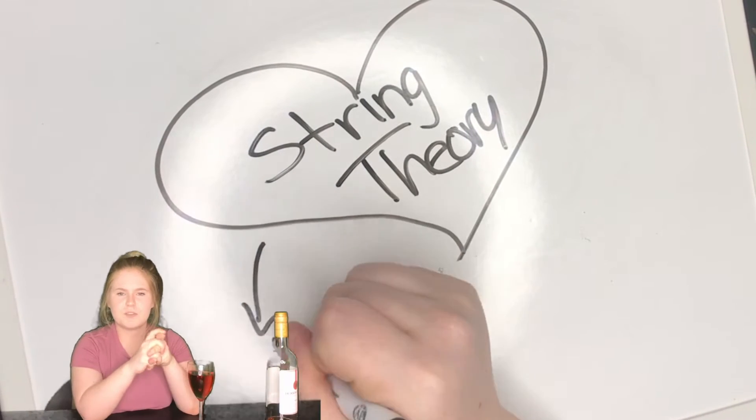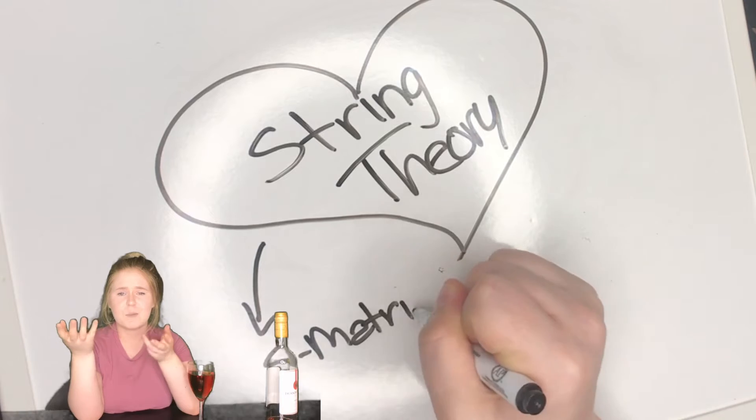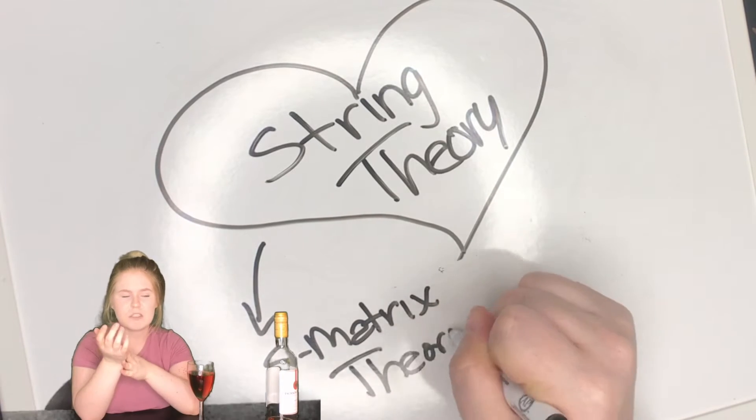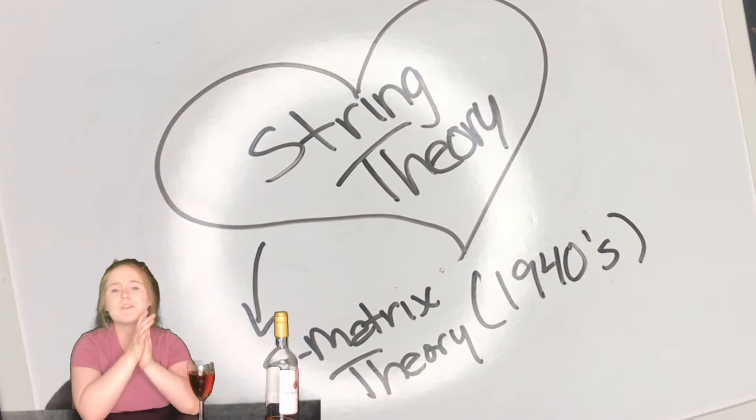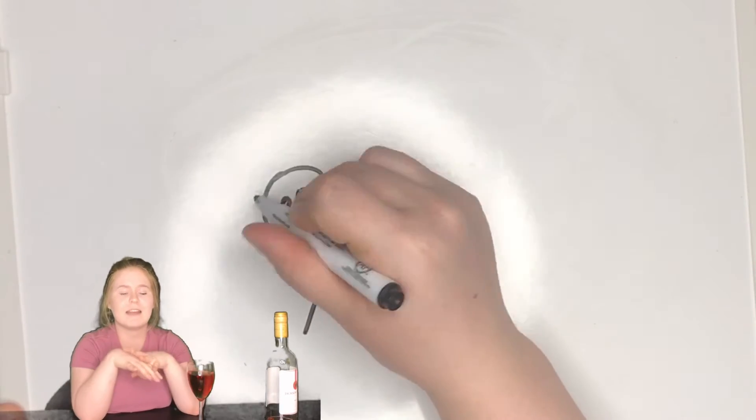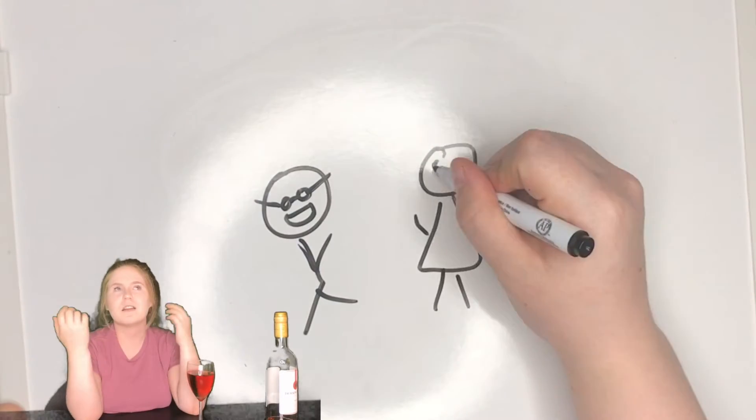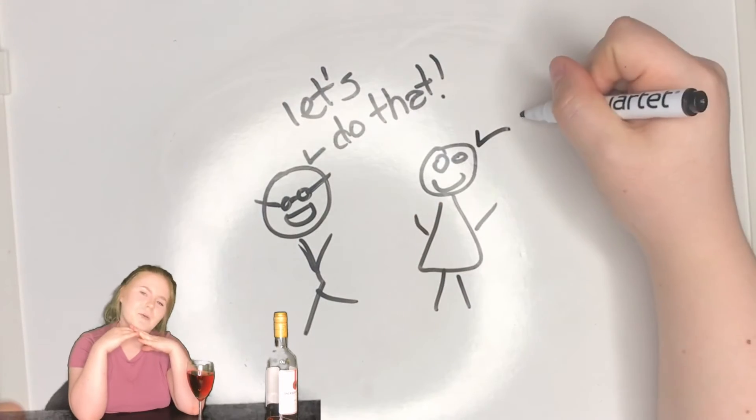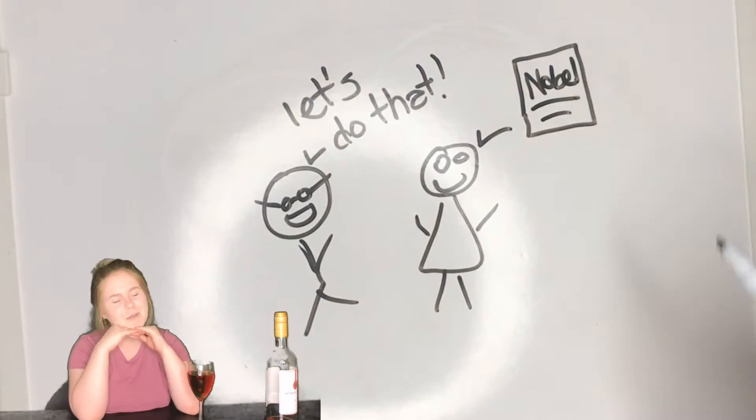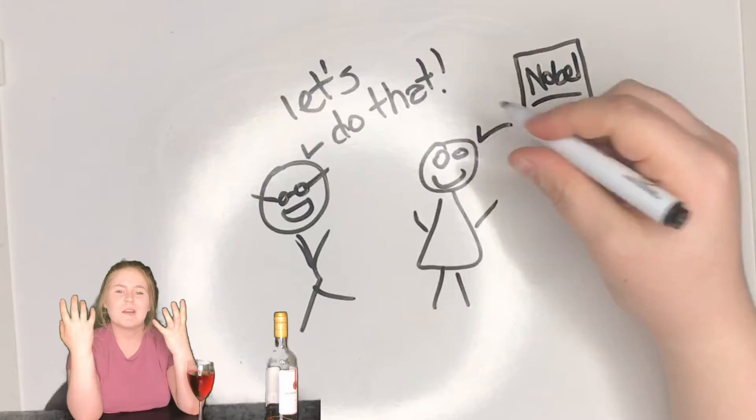So string theory comes from something called the S matrix theory, which was made I'm pretty sure in 1943, 1940 for sure. But it was a viral hit in the 50s where all the scientists were like, let's do that because we all want Nobel prizes and it'll be great. It was ultimately abandoned.